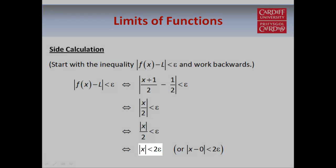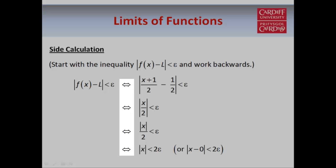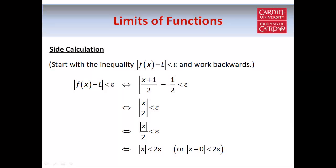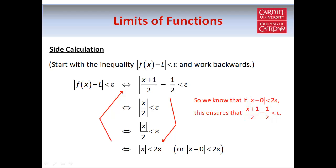Remember, this inequality is what we need rather than what we've got. And because we have equivalence signs here, meaning the steps we've written down are equivalent, that means not only can we go from the first step to the last step, we can also go from the last step back to the first step. So we know that if |x - 0| < 2ε, that actually ensures that |((x+1)/2) - (1/2)| < ε, which is what we want. So if we define delta to be equal to 2ε — because remember delta can be chosen in terms of epsilon — that will give us the result we need.